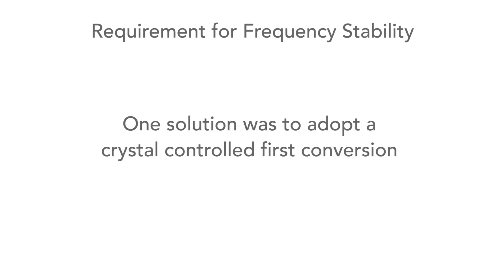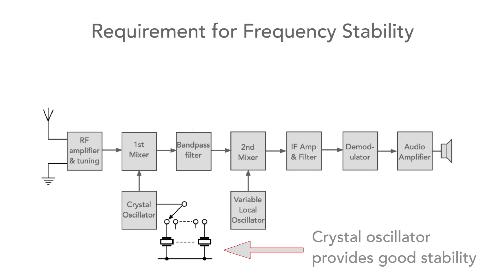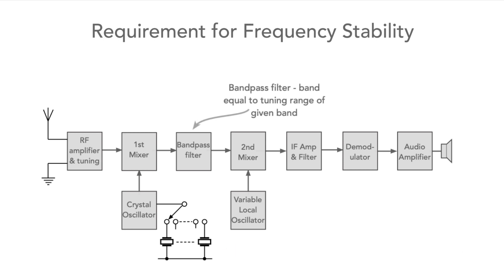One solution to overcome this problem was to adopt a crystal-controlled first conversion. This gave a much improved level of stability. Using this approach, signals were converted down to a wideband first IF, possibly covering 200 or 500 kHz. A second local oscillator would operate at a much lower frequency. As a result, it would offer much better levels of stability. It did result, however, in any receiver only being able to cover its frequency range in a large number of bands.